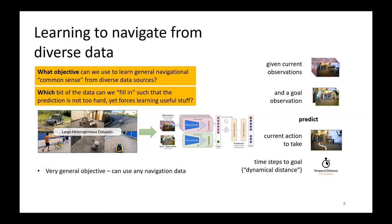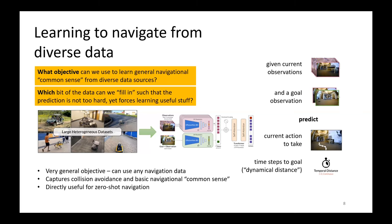So it's a very general objective. You can do this with any navigational data as long as you have sequential observations and corresponding actions. If you don't have actions, run structure-from-motion and figure out your actions. It captures collision avoidance and basic navigational common sense because you'll never see a future time step that cannot be reached — if you saw it in a trajectory, that means it is reachable. And it's directly useful for zero-shot navigation: you could actually feed goals into this model, and it will drive a robot or a vehicle.